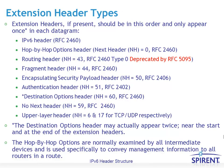The extension header types are listed on this slide. Extension headers, if present, should appear in a specific order and only appear once in each datagram — with the exception that the destination options header may appear twice: near the start where an intermediate device might process it, and at the end where the ultimate destination device would process it.